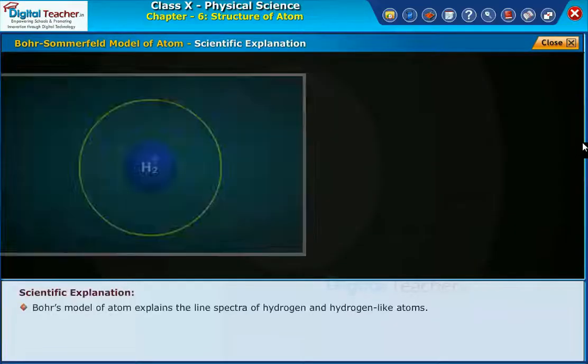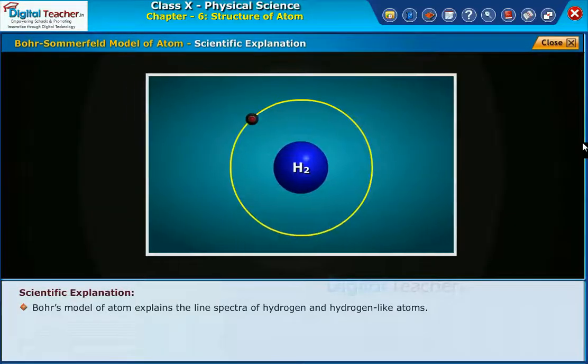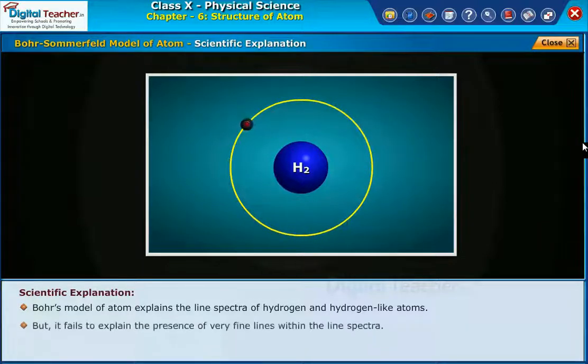Scientific explanation: Bohr's model of atom explains the line spectra of hydrogen and hydrogen-like atoms, but it fails to explain the presence of very fine lines within the line spectra.